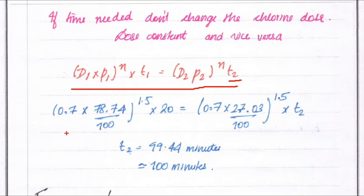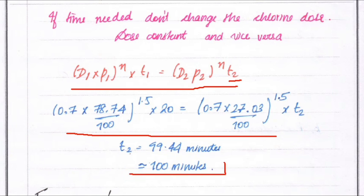Solving the calculation, we get T2 = 99.44 minutes, which we can take as approximately 100 minutes. We will see the next problem next. Thank you.